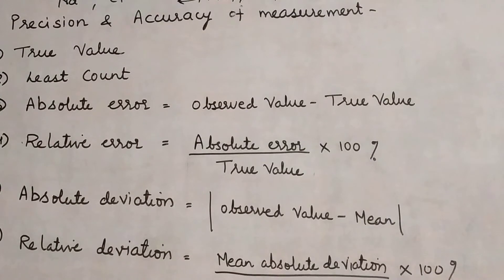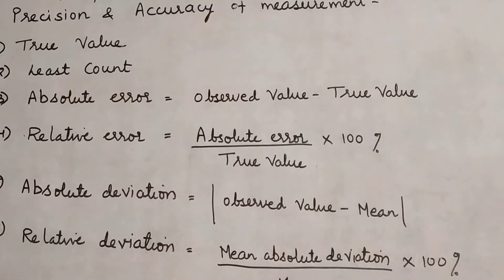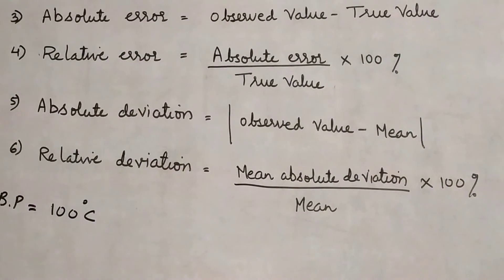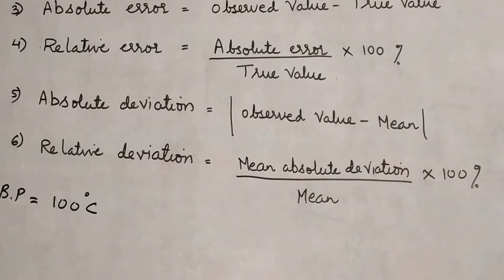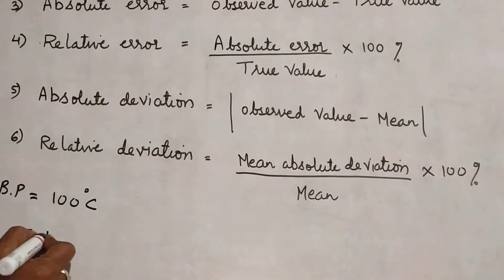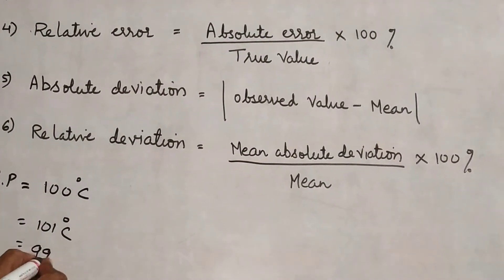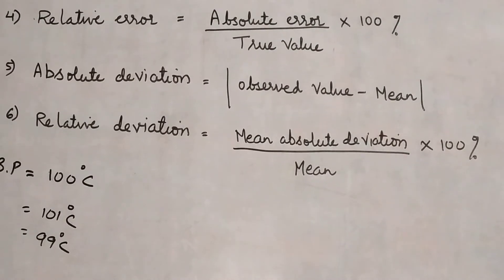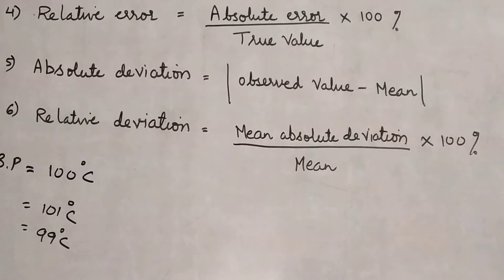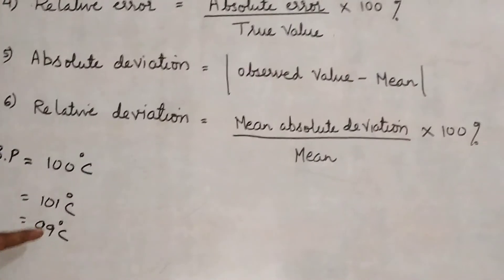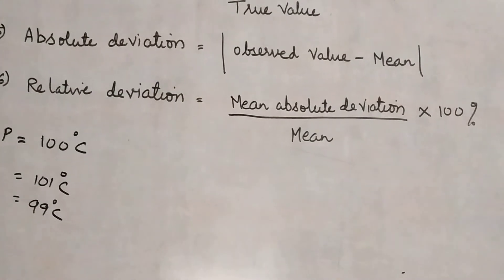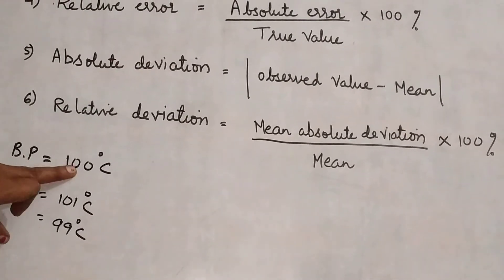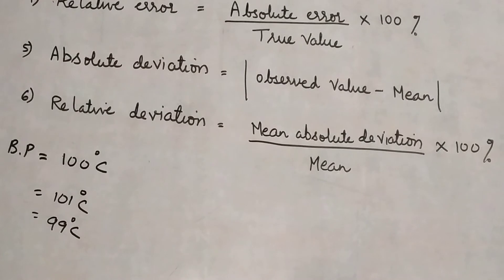For example, we know that water has its boiling point as 100 degrees Celsius. The boiling point of water is 100 degrees Celsius. Some students may get it as 101 degrees Celsius, some may get 99 degrees Celsius. So there's an error of 1 degree. The correct value, 100, is the true value. But someone got 101, someone got 99, someone got 98, someone got 102 degrees Celsius.